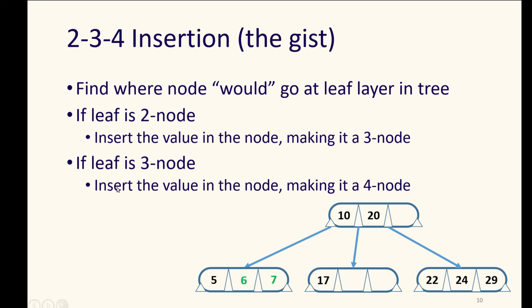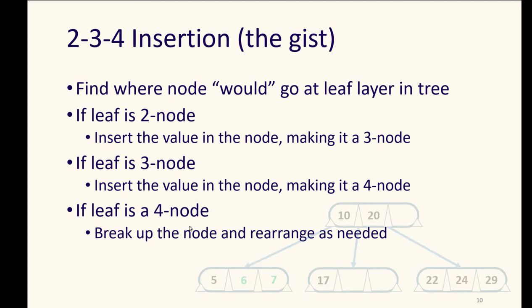If the leaf is a three node, you insert the value in the node, making it into a four node. That's fine. You just have to figure out should it go after the first key, before the first key, etc. You have to put it in the right order within that node. The tricky one is when the leaf is already a four node, is already full.